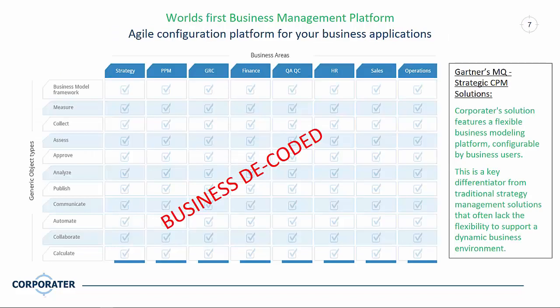What we have done with these Lego blocks is decode business. Using the Lego analogy again: if you have a big house you've built, in order to find its components you need to break it down and decode it into its small blocks. This is exactly what we have done across all functional domains, and we have found that there are a lot of similarities between those domains.